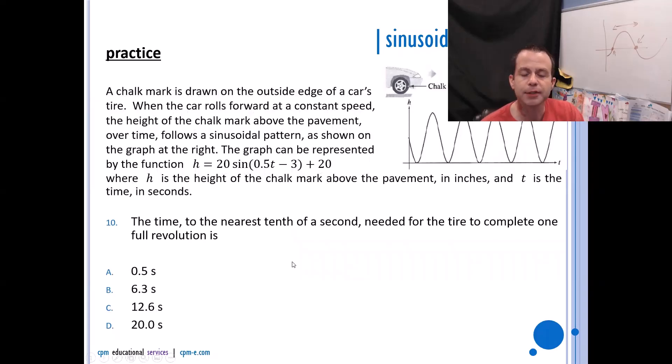The time to the nearest tenth of a second needed for the tire to complete one full revolution. Well, one full revolution is your period. So to get your period, it's 2π divided by your b value. Your b value here is 0.5, so you're going to go 2π divided by 0.5, and that'll give you 12.6 seconds.